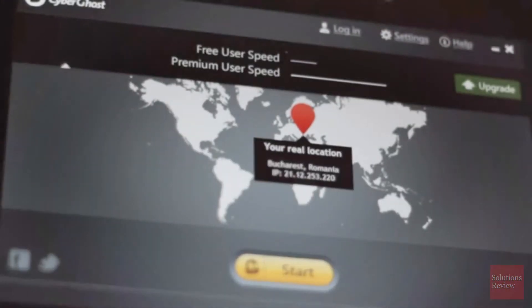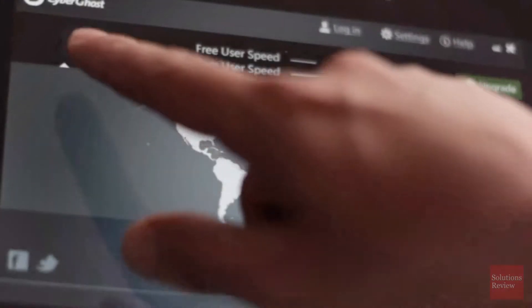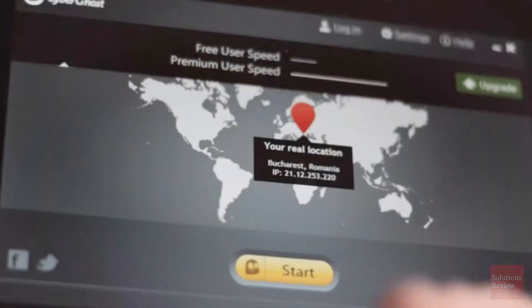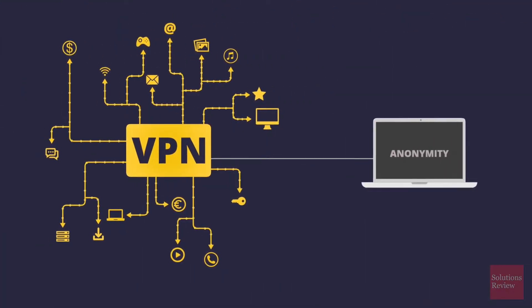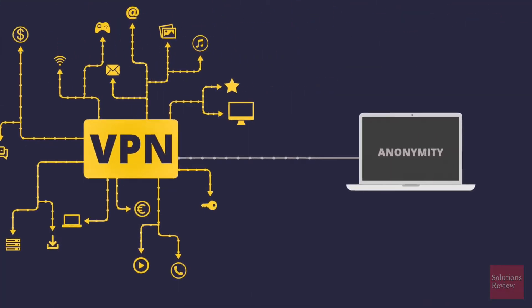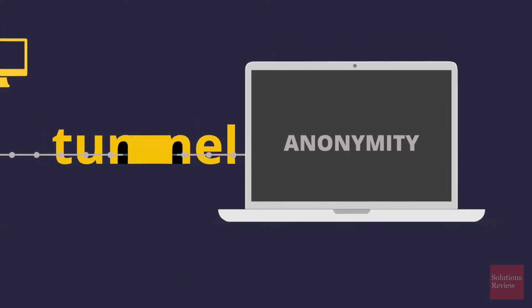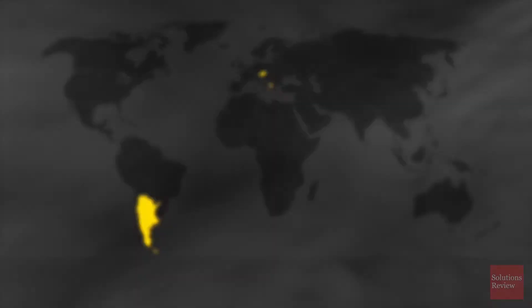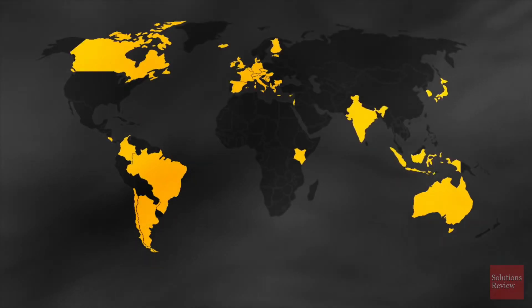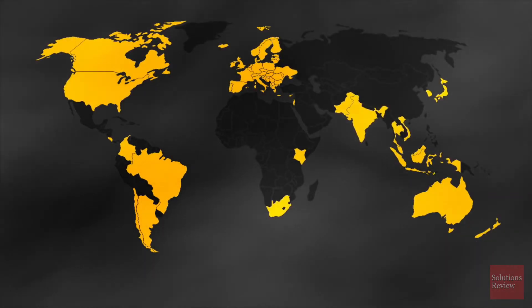Headquartered out of Bucharest, Romania, CyberGhost is a VPN service founded by Robert Knapp that aims to help its users stream and browse the internet without limitations, and stay safe and anonymous online. It's able to accomplish this thanks to a robust network of 5,700 servers in 90 countries.